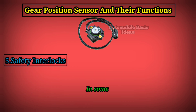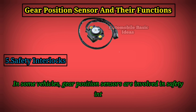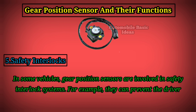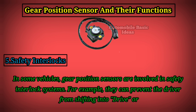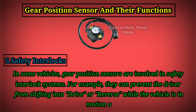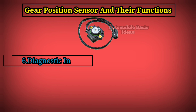Five: safety interlocks. In some vehicles, gear position sensors are involved in safety interlock systems. For example, they can prevent the driver from shifting into drive or reverse while the vehicle is in motion, or without pressing the brake pedal.